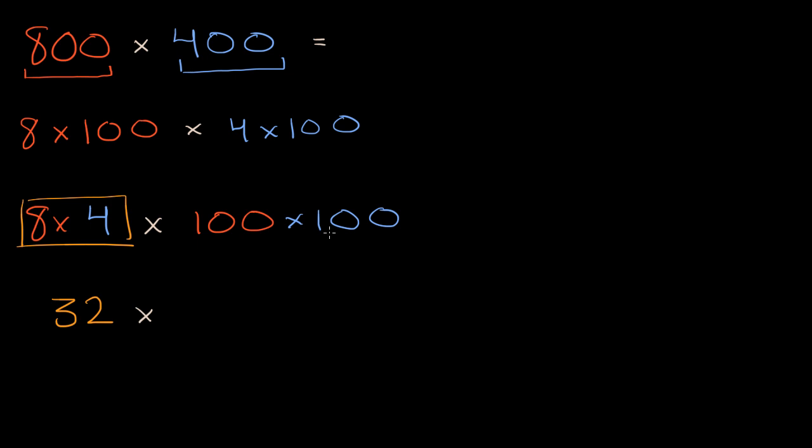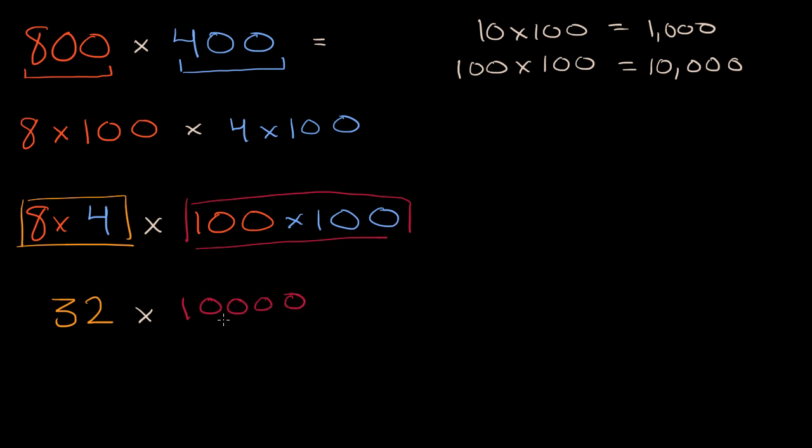And so it's going to be 32 times, what's 100 times 100 going to be? Now there's multiple ways that you could think about this. I want you to really think it through, but we'll soon see that there's a fairly fast way of making sure we got it right. 10 times 100 is equal to 1,000, and so 100 times 100 is going to be 10 times that, or it's going to be equal to 10,000. So this stuff right over here is equal to 10,000. Now you might notice something interesting here. I have two zeros and then another two zeros, so I have a total of four zeros, and then I have four zeros here.